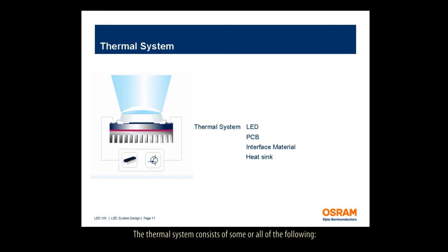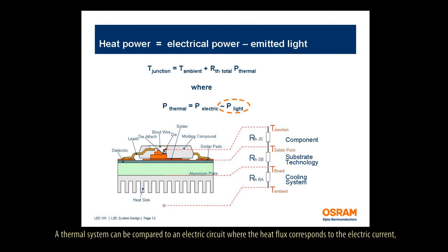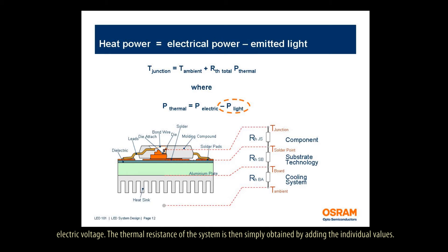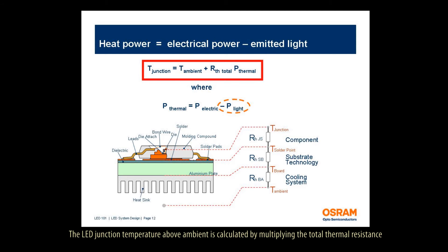The thermal system consists of some or all of the following: the LED mounted on a printed circuit board, a thermal interface layer, and a heat sink. A thermal system can be compared to an electric circuit, where the heat flux corresponds to the electric current, the thermal resistance corresponds to the electrical resistance, and the temperature above ambient corresponds to the electric voltage. The thermal resistance of the system is obtained by adding the individual values, and the LED junction temperature above ambient is calculated by multiplying the total thermal resistance with the produced heat power.